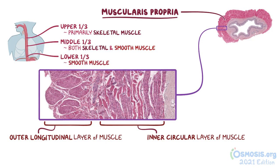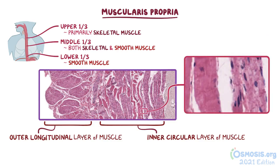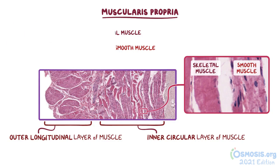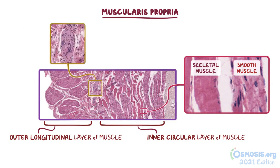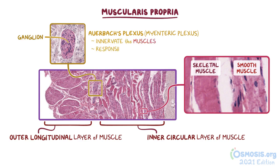This cross-section of the esophagus was taken from the middle third, so if we zoom in to 40 times magnification, we can see that both skeletal and smooth muscle are present. The skeletal muscle can be differentiated from the smooth muscle by the typical striations we'd expect to see in skeletal muscle fibers. Between the inner and outer layers of muscle, there's also a network of nerves called the Auerbach's plexus, or myenteric plexus. In this image, a ganglion or a group of neuron cell bodies can be seen with its pink outer capsule visible as well. These nerves innervate the muscles and are responsible for producing the organized rhythmic contractions that result in the peristaltic movement of the esophagus.